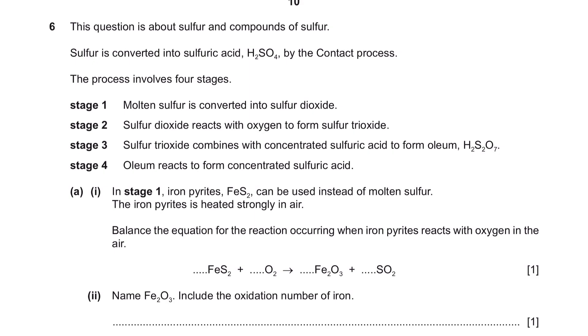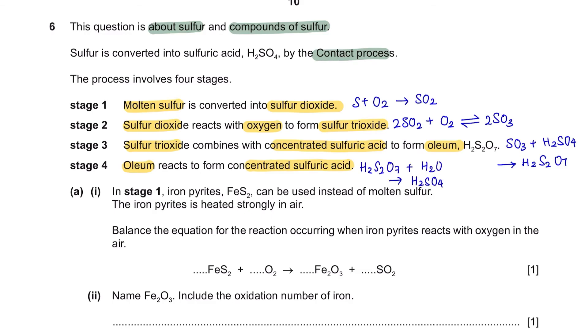Question 6. This question is about sulfur and compounds of sulfur. Sulfur is converted into sulfuric acid by the contact process. The process involves four stages. Stage 1: Molten sulfur is converted into sulfur dioxide. This happens by burning sulfur in air. Stage 2: Sulfur dioxide reacts with oxygen to form sulfur trioxide. This process here is reversible. Stage 3: Sulfur trioxide combines with concentrated sulfuric acid to form oleum. Stage 4: Oleum reacts to form concentrated sulfuric acid. In stage 4, oleum is mixed carefully with water to form sulfuric acid.